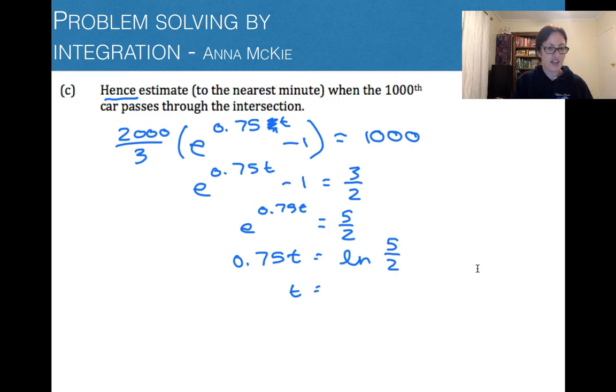Keep solving for t here. So we'd have times by 1 on 0.75 of ln 5 on 2. Using your calculators, that's our answer. So that's near the time when we're at 1,000 cars.